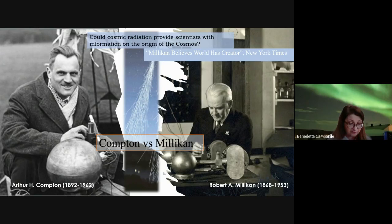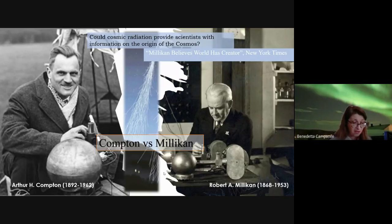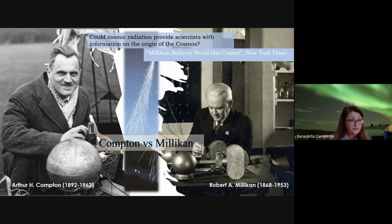Millikan proposed a vision of a universe continually creating and recreating itself to go on to eternity, but this hypothesis did not find everyone's favor. In 1932, in opposition to the Millikan thesis, Arthur Compton concluded that cosmic rays were principally charged particles. Compton and his collaborators measured the geomagnetic effects brought about by changing latitude and longitude, and the variation of the intensity of cosmic rays with height. The question now concerned the nature of their charge — was it positive or negative? Could cosmic radiation deliver information to scientists about the origin of the cosmos?